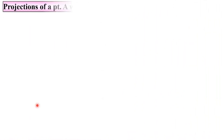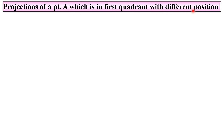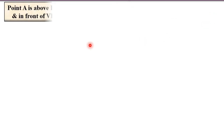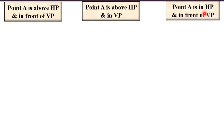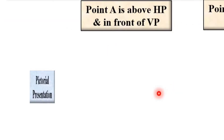Let us see the projection of point A, which is in the first quadrant, with different positions with respect to the horizontal plane and vertical plane. For example: point A is above HP and in front of VP; then point A is above HP and in VP; and lastly, point A is in HP and in front of VP. Let us see all three cases one by one.